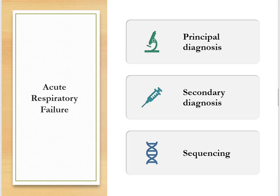Lastly for respiratory failure, we're going to look at sequencing of acute respiratory failure alongside another acute condition. When the patient is admitted with respiratory failure and another acute condition, the principal diagnosis is not going to be the same in every situation — this applies whether the other acute condition is respiratory or non-respiratory. Your principal diagnosis is dependent on the circumstances of the admission. If both the respiratory failure and the other acute condition are equally responsible for the admission and there are no other chapter-specific sequencing rules, we follow the guidance under selection of principal diagnosis, which states that when two or more diagnoses equally meet the definition of principal, either can be sequenced first.